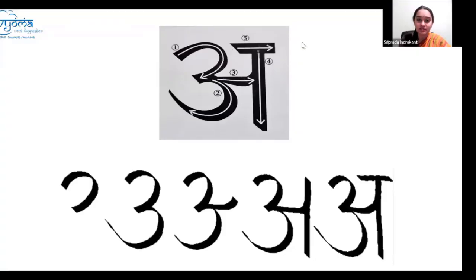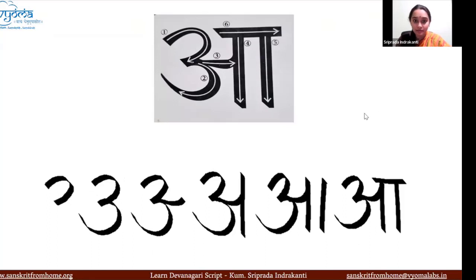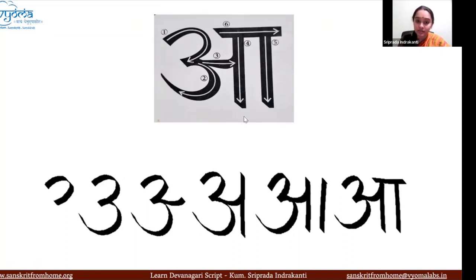Each vowel has its own significance. We will be doing 'a' — this was the haswa. Now going to the next one, the deerkha. We do the same method we used for doing the haswa, and when it comes to the deerkha we just put another vertical line next to the vertical line we already drew. So next to 'a' you put another vertical line and it becomes 'ā'.